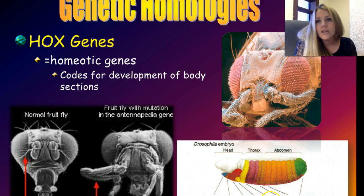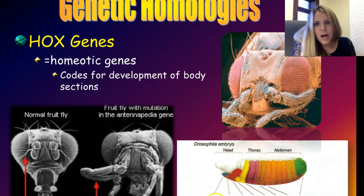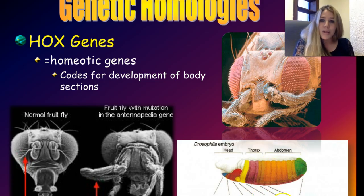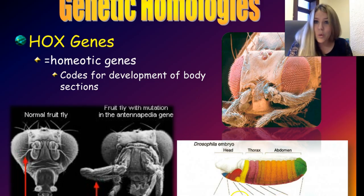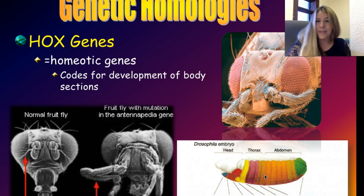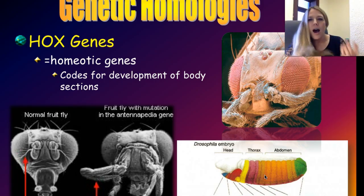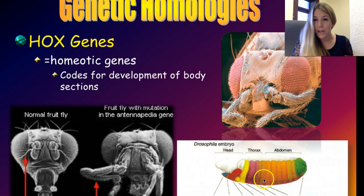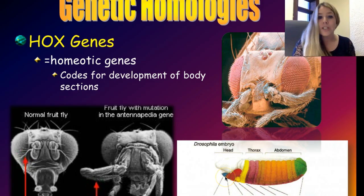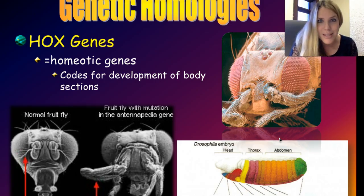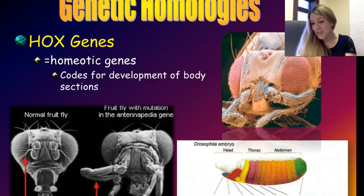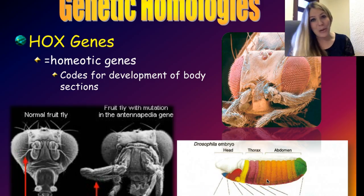In a fruit fly embryo, each color represents a different Hox gene. The green Hox gene codes for the tail segment, blue for the head segment, and the orange ones code for the abdomen and thorax — making legs and wings. Researchers have done Frankenstein-style experiments: taking a Hox gene for making legs from the middle of the fly embryo and inserting it into the head region — and lo and behold, legs grow out of the head. Similarly, inserting eye Hox genes into the middle of the embryo produces legs with eyes growing on them.